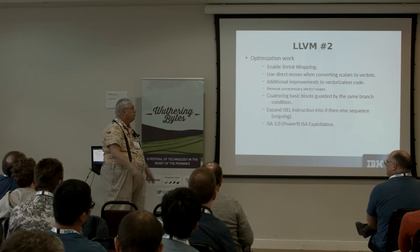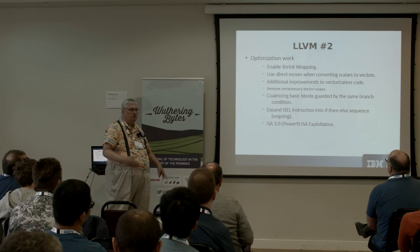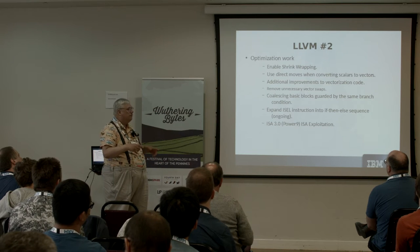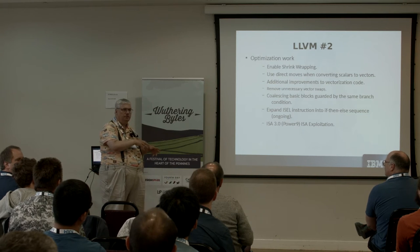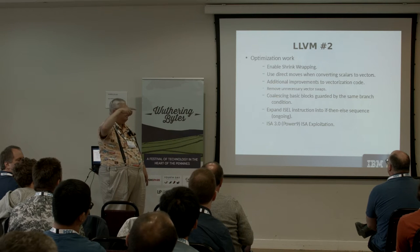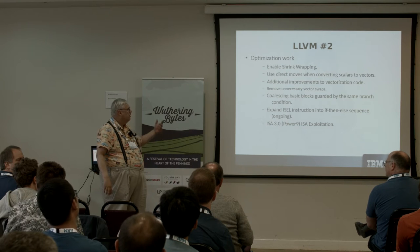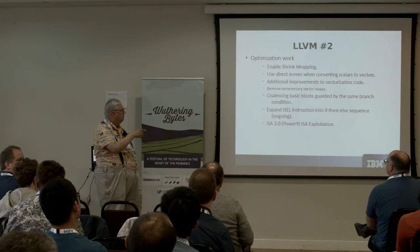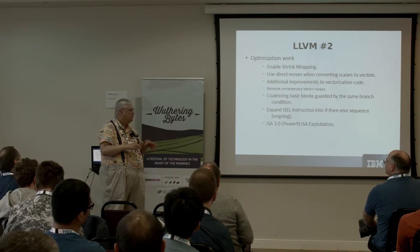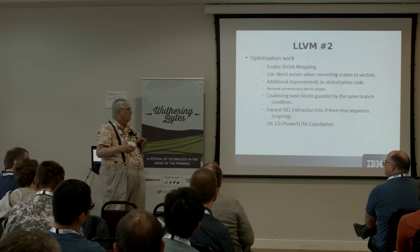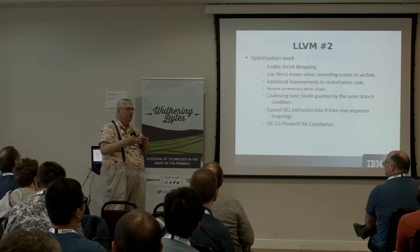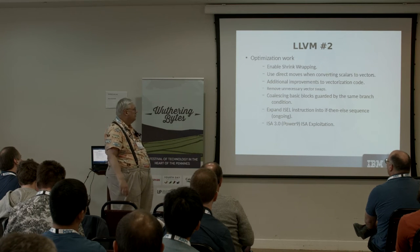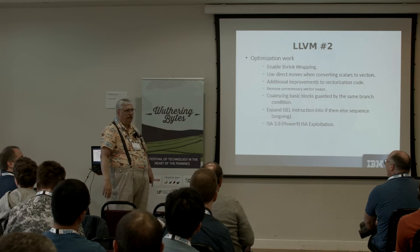Now in addition to enablement work, they're doing optimization: adding shrink wrapping, much like within GCC where shrink wrapping is becoming important. Direct moves when converting scalars to vectors — the direct move instruction moves from the GPR register set to the vector register set, and that was added in Power8. Additional improvements in vectorization code, removing unnecessary vector swaps, coalescing basic blocks guarded by the same branch condition, and expanding ISEL into if-then-else. ISEL is the conditional move instruction originally added in the embedded PowerPCs, and we're promised it will perform much better in Power9.